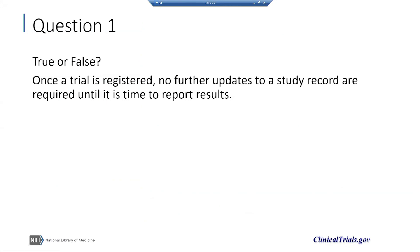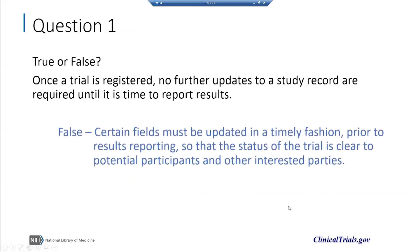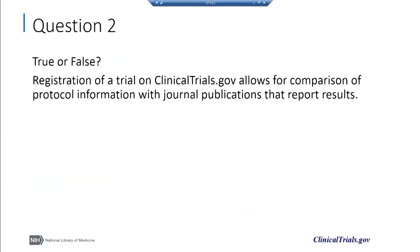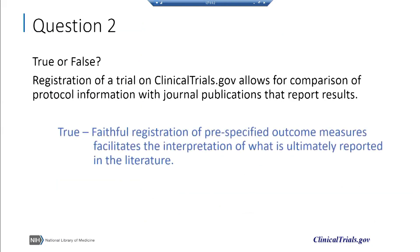Now I'll ask a couple of questions to review the material we've covered. True or false: once a trial is registered with clinicaltrials.gov, no further updates to a study record are required until it is time to report results. This is false. There are certain fields that must be updated in a timely fashion prior to results reporting so that the status of the trial is clear to potential participants and to other interested parties. True or false: registration of a trial on clinicaltrials.gov allows for comparison of protocol information with journal publications that report results. This is true. Faithful registration of pre-specified outcome measures facilitates the interpretation of what is ultimately reported in the literature.